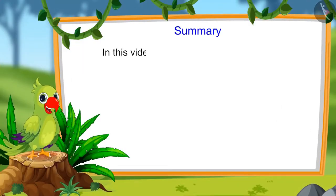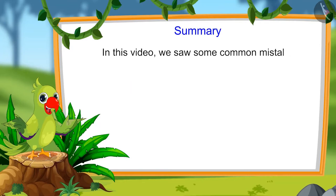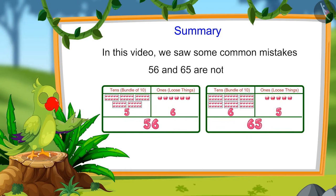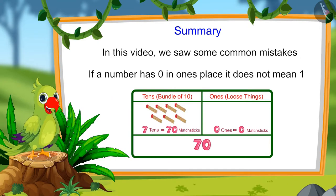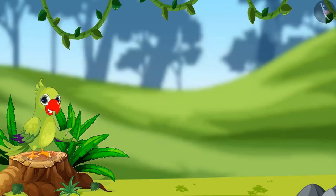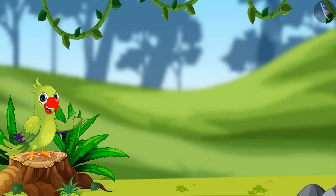In this video, we saw some common mistakes that we should avoid. For instance, 56 and 65 are not equal, and if a number has zero in one's place, it does not mean 10. I sincerely hope that you have understood this topic. Bye, friends!